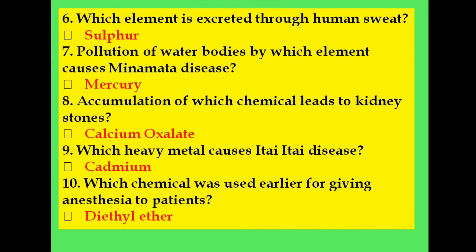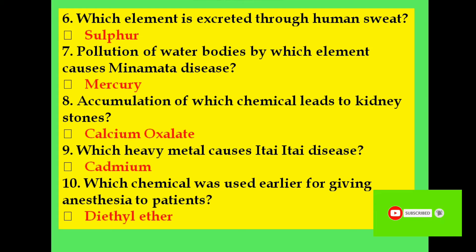Which element is excreted through human sweat? Sulfur. Pollution of water bodies by which element causes Minamata disease? Mercury. Accumulation of which chemical leads to kidney stones? Calcium oxalate. Which heavy metal causes itai-itai disease? Cadmium. Which chemical was used earlier for giving anesthesia to patients? Diethyl ether.